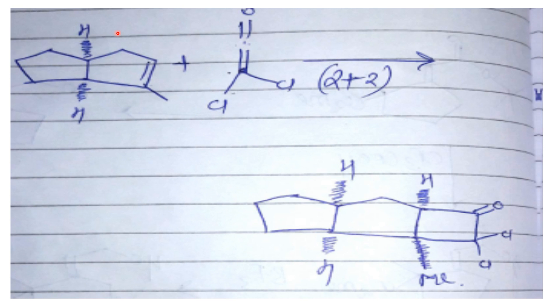You can see a [2+2] cycloaddition here — this double bond and this double bond will undergo [2+2] cycloaddition to give a four-membered cyclic ring. Now consider the stereochemistry: whatever stereochemistry is present on this five-membered bridged ring system, that same stereochemistry will carry through into the next alkylation step.